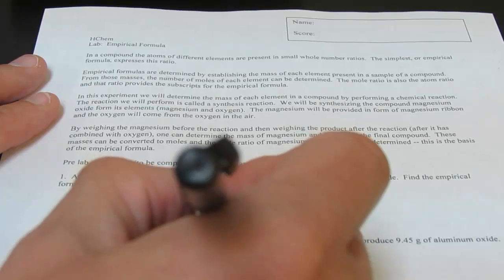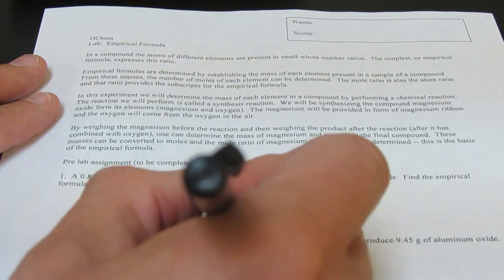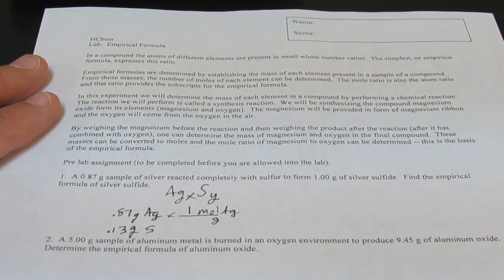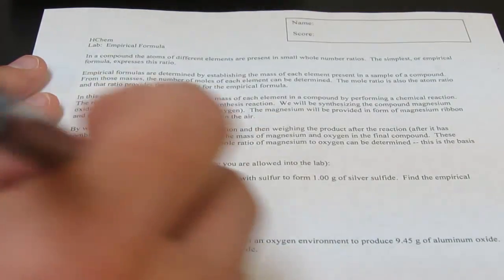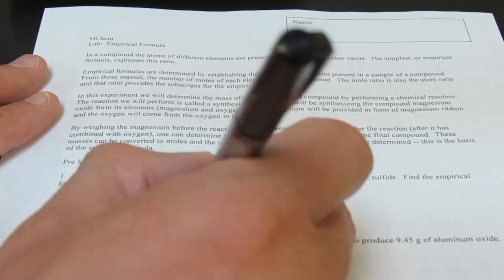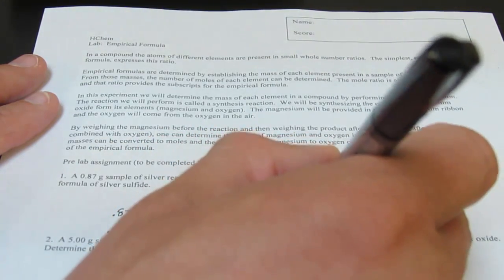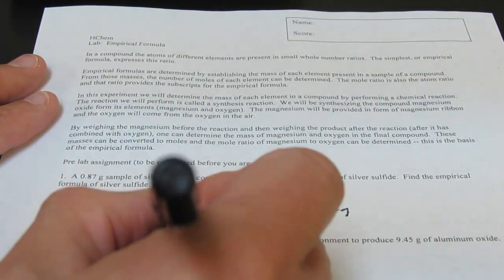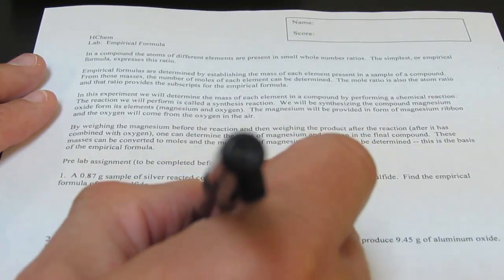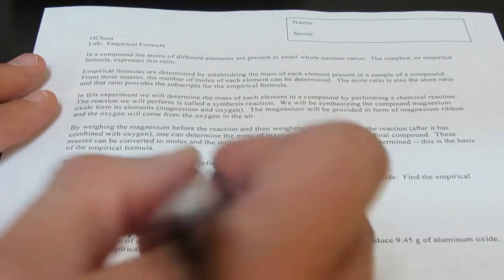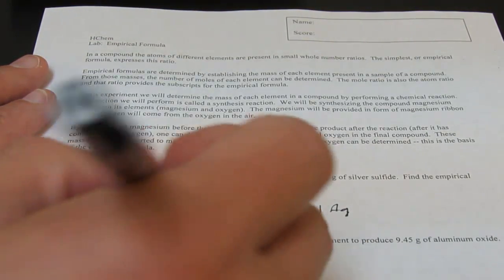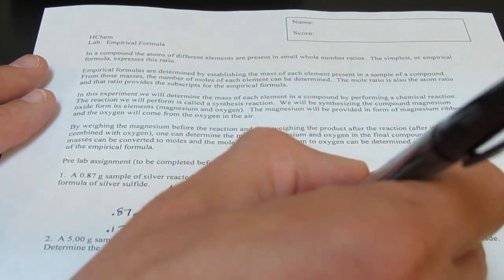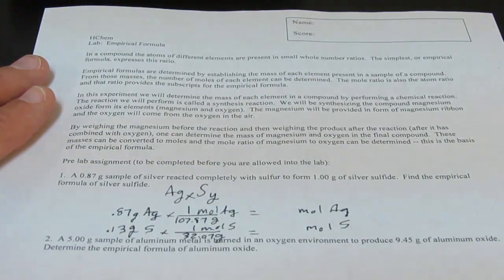So we're going to go from grams to moles of silver, and we always put 1 by mole, and the grams we get from the periodic table. For silver, that is 107.87. And that will give us moles of silver in my compound. We'll do the same with sulfur. We're going to go from grams to moles of sulfur. One mole of sulfur is 32.07 grams. Once again, we get that number from the periodic table, and this will give us moles of sulfur that were consumed in that reaction.